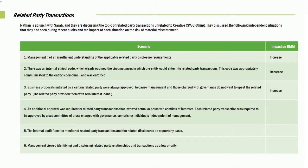In our next situation, an additional approval was required for related party transactions that involve actual or perceived conflicts of interest. Each related party transaction was required to be approved by a subcommittee of those charged with governance comprising individuals independent of management. That's extra strength, and that decreases the risk of material misstatement. In our next one, the internal audit function monitors related party transactions and the related disclosures on a quarterly basis. Monitoring is obviously a good thing — that will decrease the risk of material misstatement.